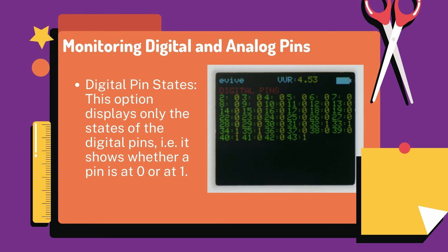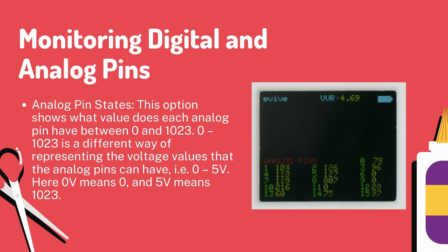The digital pin states option displays only the states of the digital pins. For example, it shows only whether a pin is at zero or at one. For monitoring digital and analog pins, the analog pin states option shows what value each analog pin has, between zero and 1023.